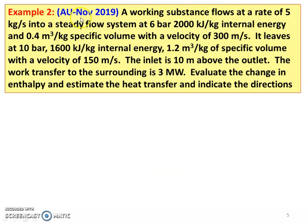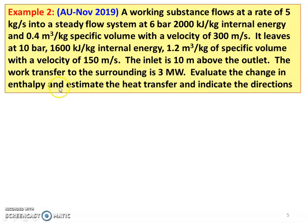Example number 2, from the November 2019 question paper. A working substance flows at a rate of 5 kilograms per second into a steady flow system at 6 bar, 2000 kilojoules per kilogram internal energy and 0.43 meter cube per kilogram specific volume with a velocity of 300 meters per second. It leaves at 10 bar, 1600 kilojoules per kilogram internal energy, 1.2 meter cube per kilogram specific volume with a velocity of 150 meters per second. Inlet is 10 meters above the outlet and the work transfer to the surrounding is 3 megawatt. Evaluate the change in enthalpy and the heat transfer and indicate the direction.